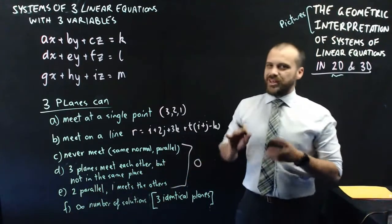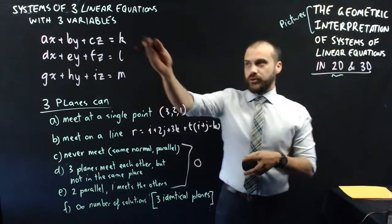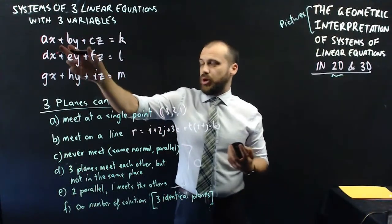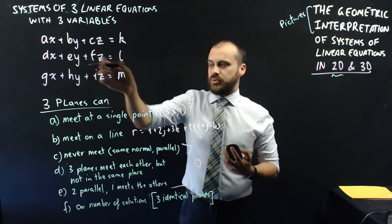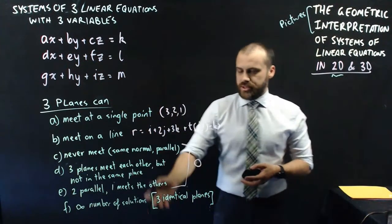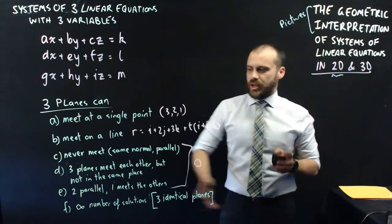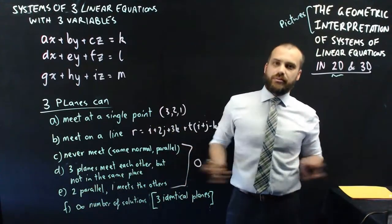And finally, here, we have an infinite number of solutions if all of those equations are just the same equation. This one might be this one times two, and this one times three, but they're all the same. In which case, when you solve that system of linear equations, it's going to spit something out, and you're going to realize that you have an infinite number of solutions there.